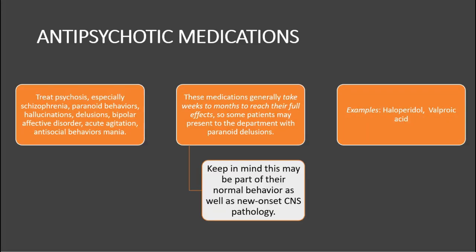Anti-psychotic medications treat psychosis, especially schizophrenia, paranoid behaviors, hallucinations, delusions, bipolar affective disorder, acute agitation, antisocial behaviors, and mania. These medications generally take weeks to months to reach their full effect. Some patients may present to the department with paranoid delusions, so you have to keep in mind that this may be part of their normal behavior as well as a new onset of a CNS pathology — you've got to rule out something new.